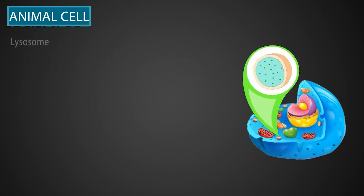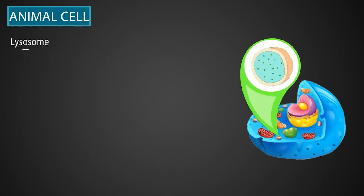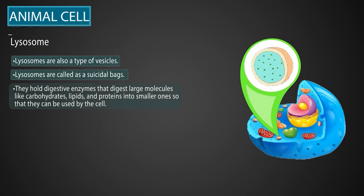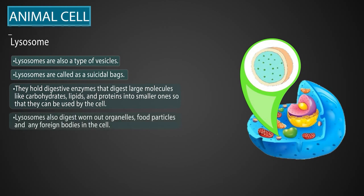Next are lysosomes. Lysosomes are also a type of vesicles. Lysosomes are also called suicidal bags, as they hold digestive enzymes that digest large molecules like carbohydrates, lipids, and proteins into smaller ones, so that they can be used by the cell. Lysosomes also digest worn-out organelles, food particles, and any foreign bodies in the cell.